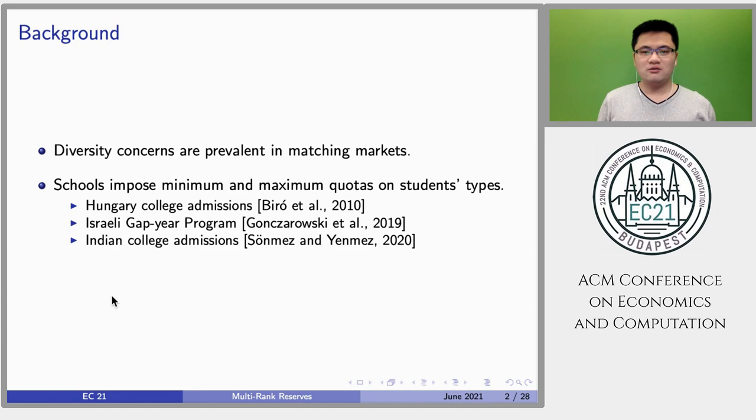Typically, the diversity goals are achieved by setting minimum and maximum quotas on students' types, which have been used in Hungarian College Admissions, Israeli Gap Year Program, and Indian College Admissions.